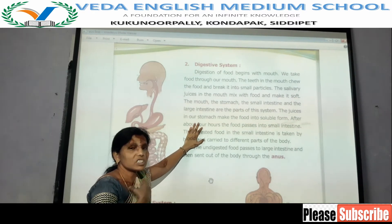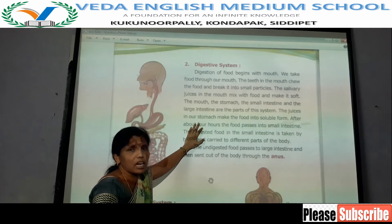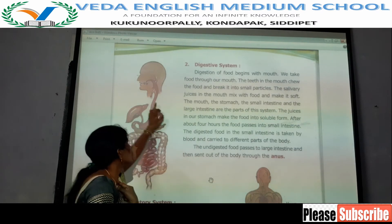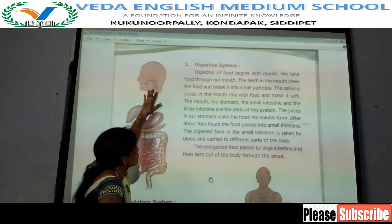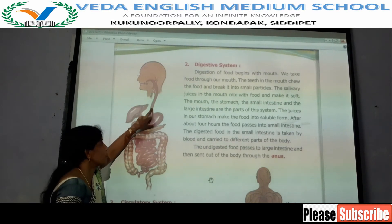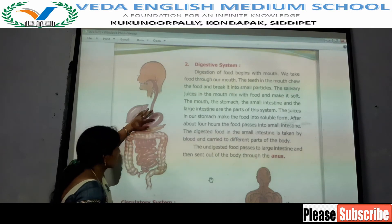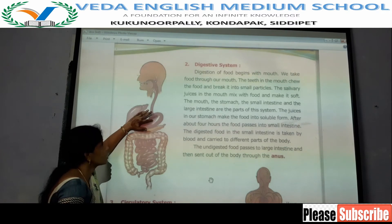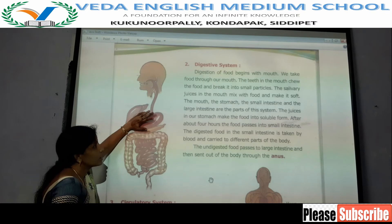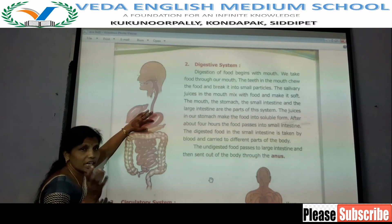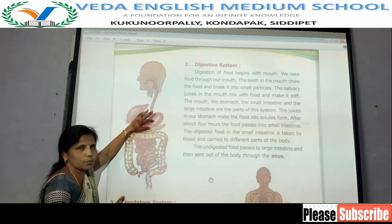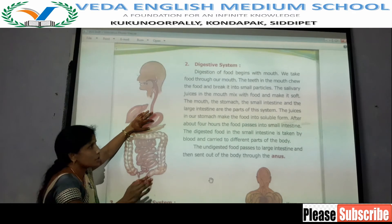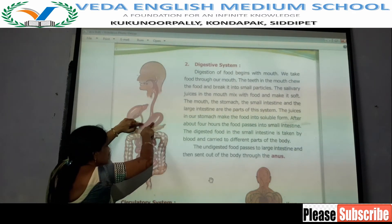From the mouth, the food enters into the stomach through the food pipe. In the stomach, some digestive juices are present. These digestive juices make the food into soluble form — meaning the food dissolves into a liquid form.